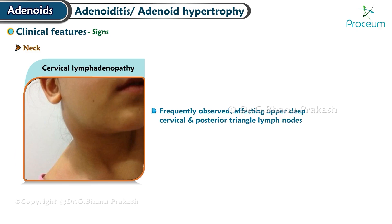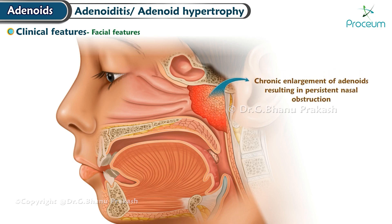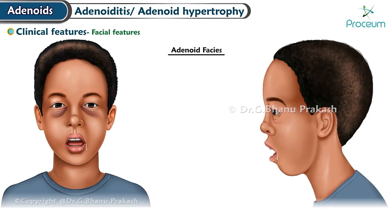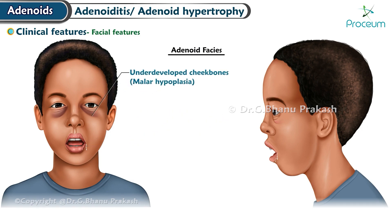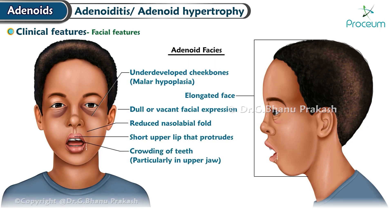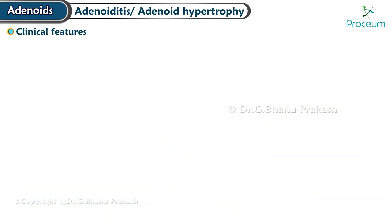Neck: Cervical lymphadenopathy is frequently observed, affecting the upper deep cervical and posterior triangle lymph nodes. Facial features — adenoid facies: Chronic enlargement of the adenoids resulting in persistent nasal obstruction can lead to various facial characteristics, including narrowed or pinched nose, habitual mouth breathing, saliva dribbling, flattened nasal arch, underdeveloped cheekbones (malar hypoplasia), elongated face, dull or vacant facial expression, reduced nasolabial fold, and short upper lip that protrudes.